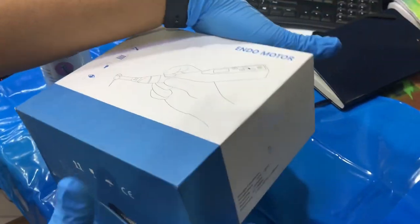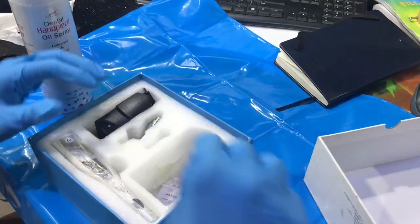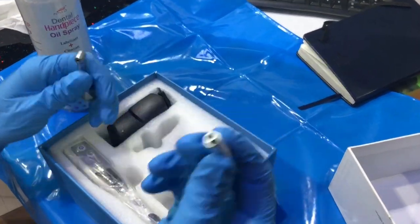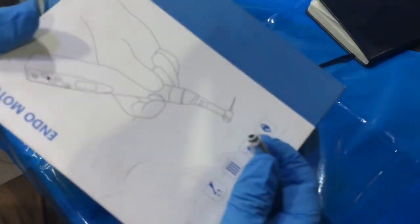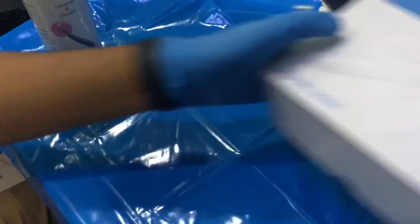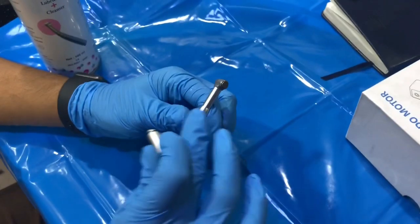You must have noticed in your box you have a small part. You must have questioned yourself what it's used for. This is basically to lubricate and maintain your handpiece.